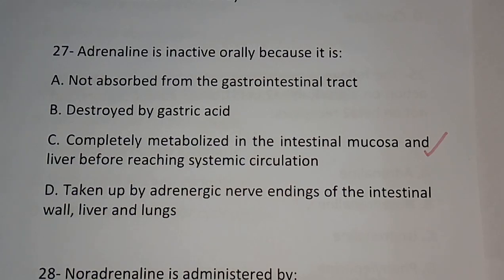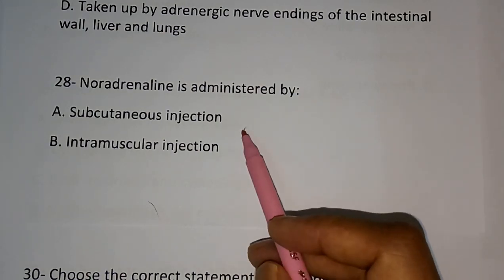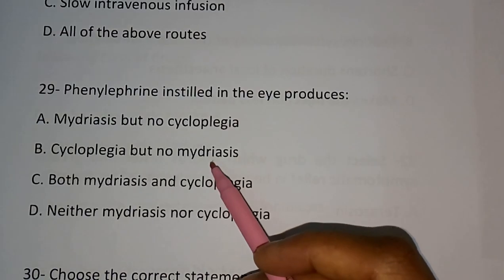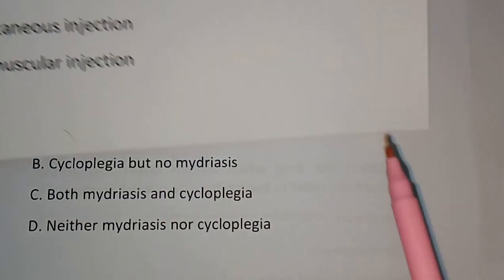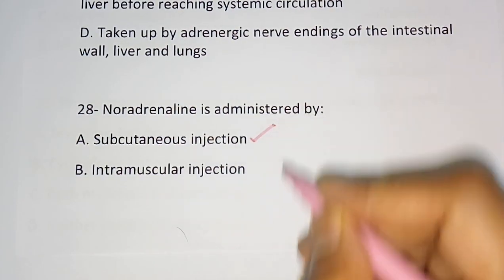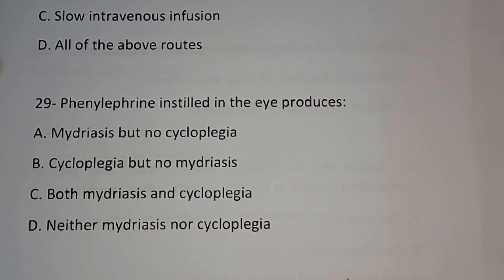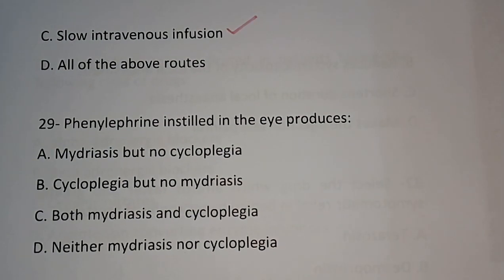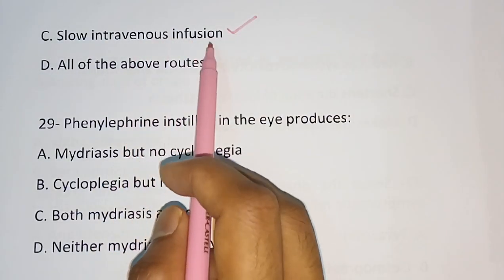Question number 28: Noradrenaline is administered by — Subcutaneous injection, Intramuscular injection, Slow intravenous infusion, All of the above. The correct answer is: Slow intravenous infusion. Make sure — Noradrenaline is administered by slow intravenous infusion.